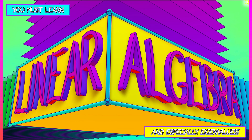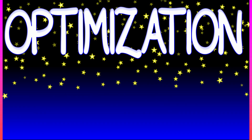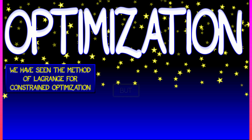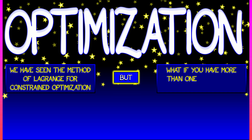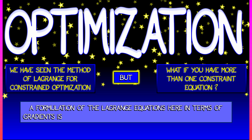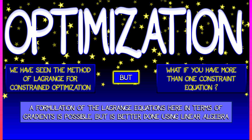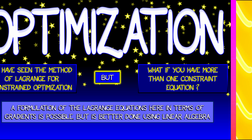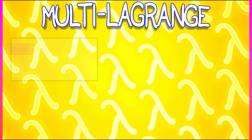Let's take a peek at some applications to optimization beyond what we've done. We've seen Lagrange multipliers and that method for constrained optimization. But what happens when you have multiple constraints? You can formulate this in terms of gradients, but the geometry is a little less clear. It's better to just jump to the linear algebra.